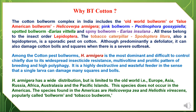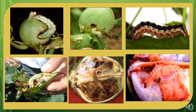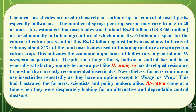Helicoverpa armigera has a multivoltine and prolific pattern of breeding and high polyphagy in nature. It is a highly destructive and wasteful feeder - a single larva can damage many squares and balls, causing huge losses to farmers. It has a wide distribution limited to the old world: Europe, Asia, Russia, Africa, Australia, and Pacific Islands. It does not occur in the Americas - the species found there are Helicoverpa zea and Heliothis virescens, popularly called bollworm and tobacco budworm. Pictures here show false American bollworm and pink bollworm attack, how they enter balls and damage the crop.